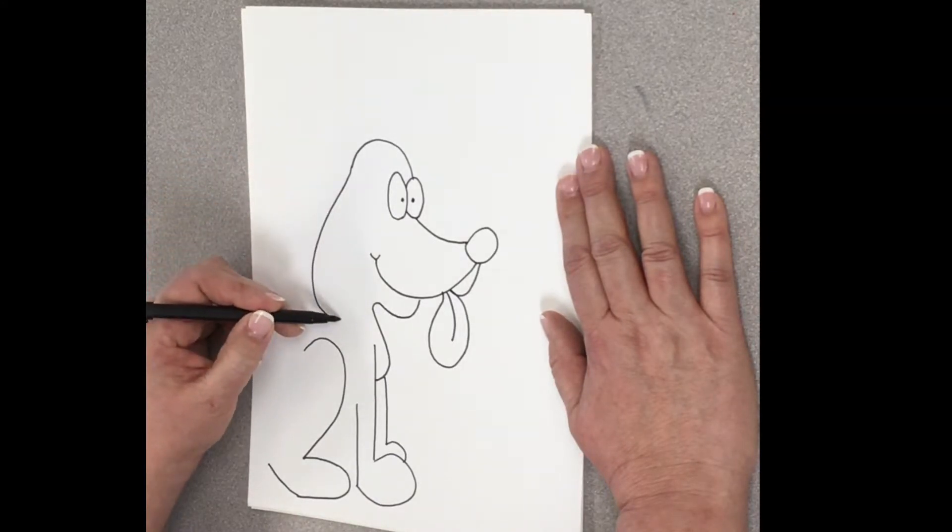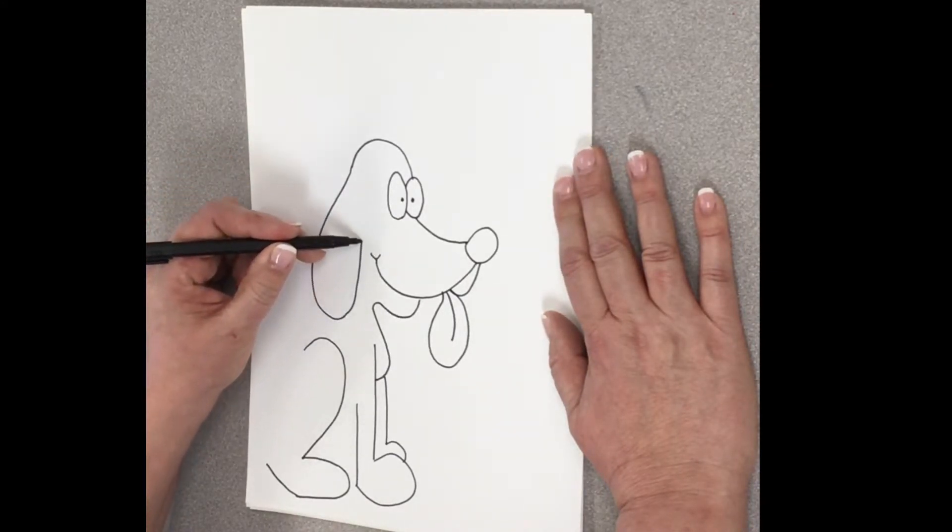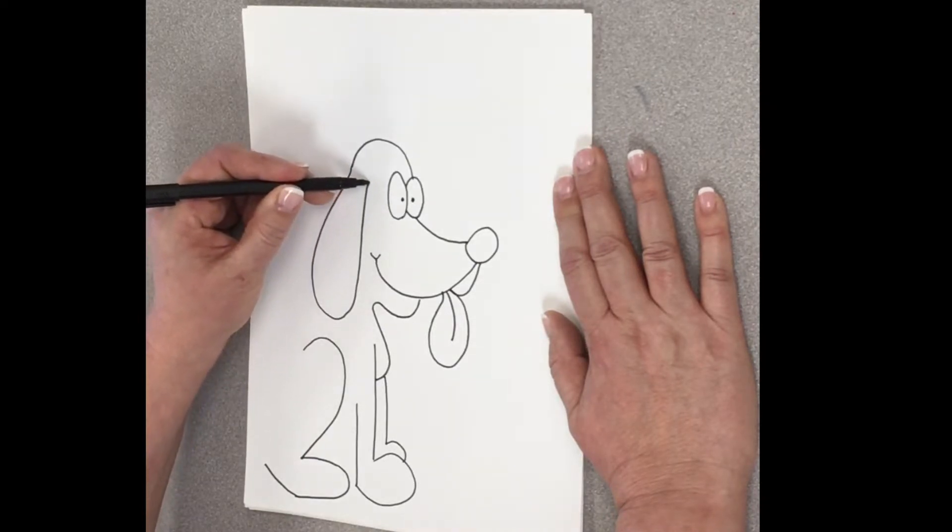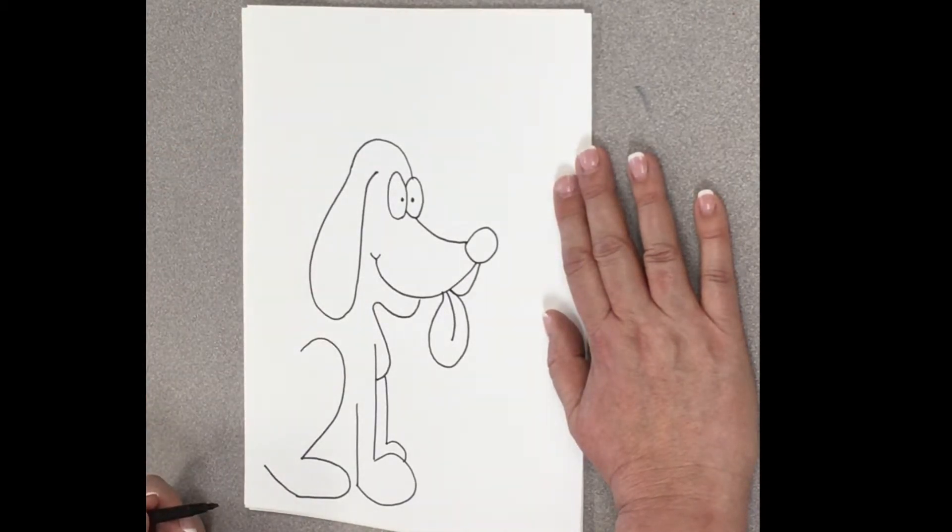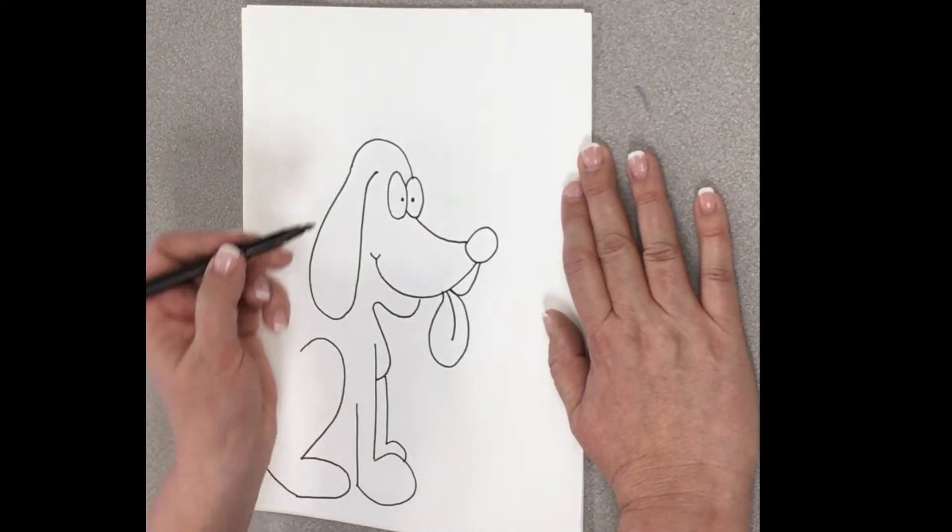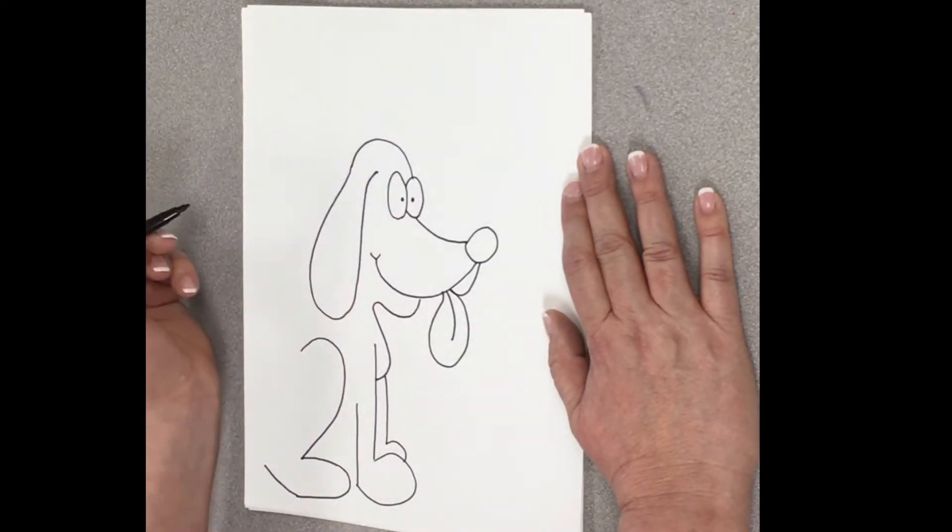And then I'm going to come down. This is going to be his big floppy ear. Oh, this is a cute doggie. And then I'm going to come up and give it just a little hook over. I love dog ears. They're so fuzzy and sweet.